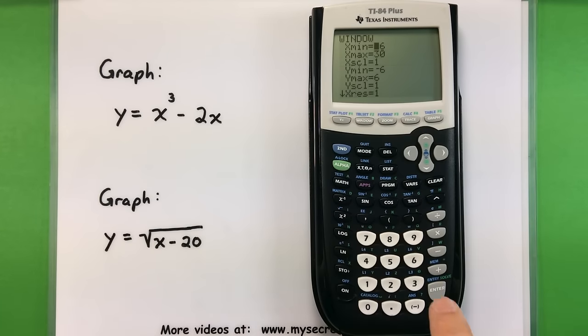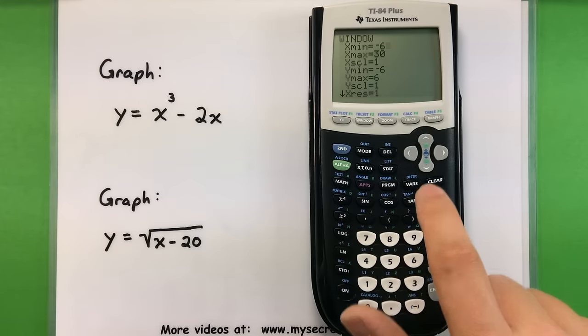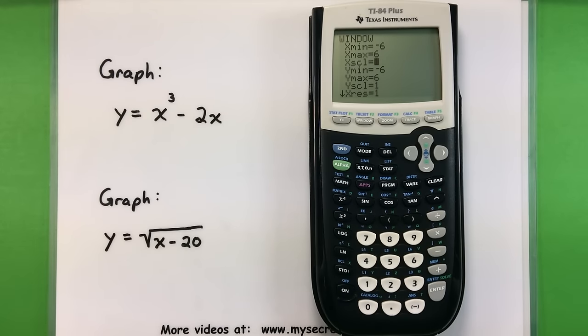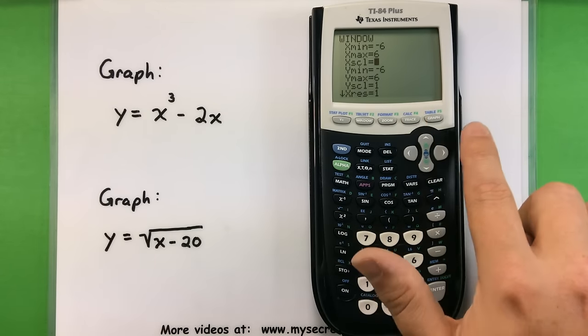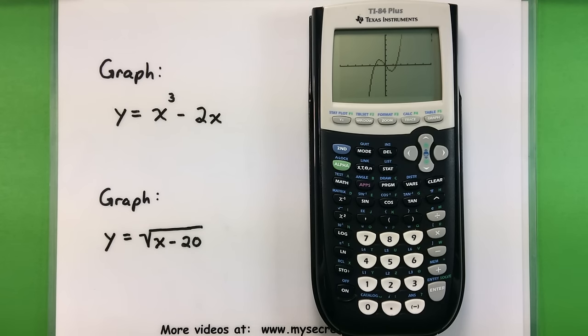Alright, let's adjust our window just so we have that first one on there again. So that goes between negative 6 and 6 for my window on the X and Y. There's a good picture of the first one. And let's lastly cover some tracing features.